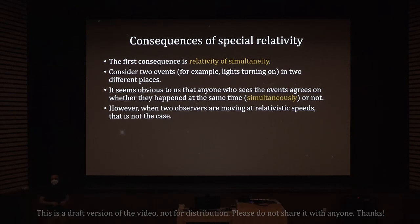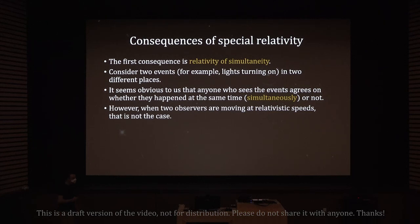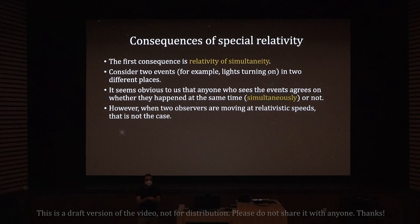The first consequence I'm going to talk about is relativity of simultaneity. Consider two events — for example, lights turning on in two different places. Imagine two light bulbs, one here and one there on each side of the desk. There's a switch; I press it and it turns both lights on.